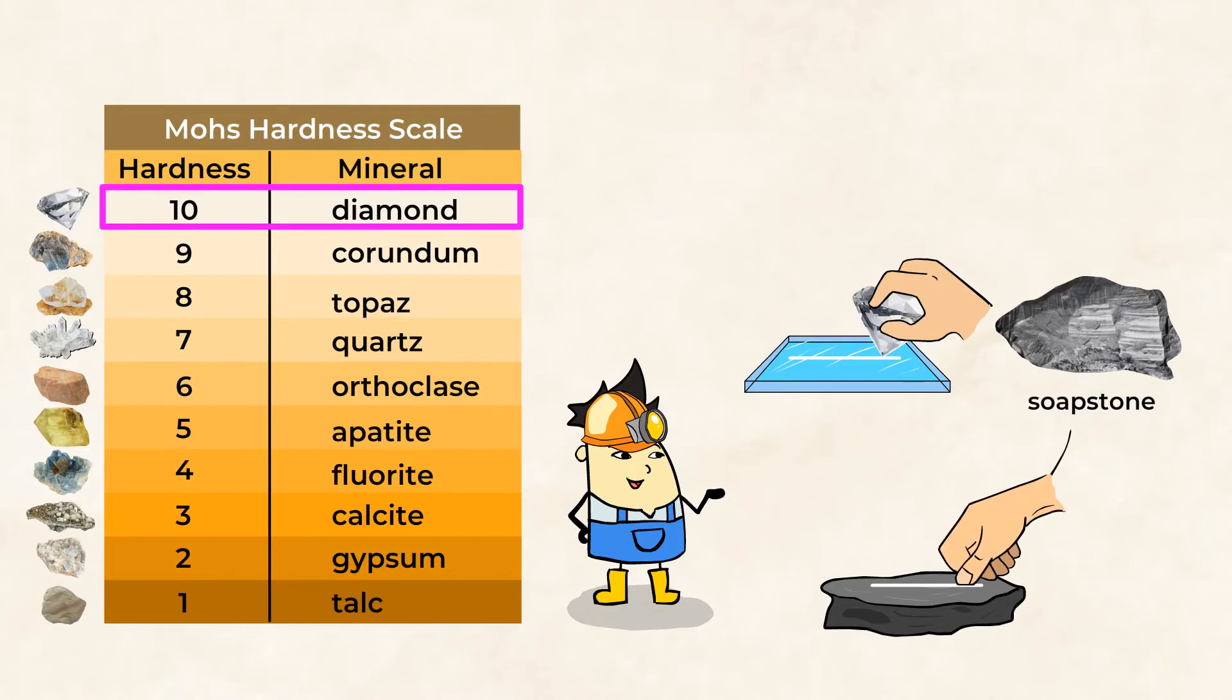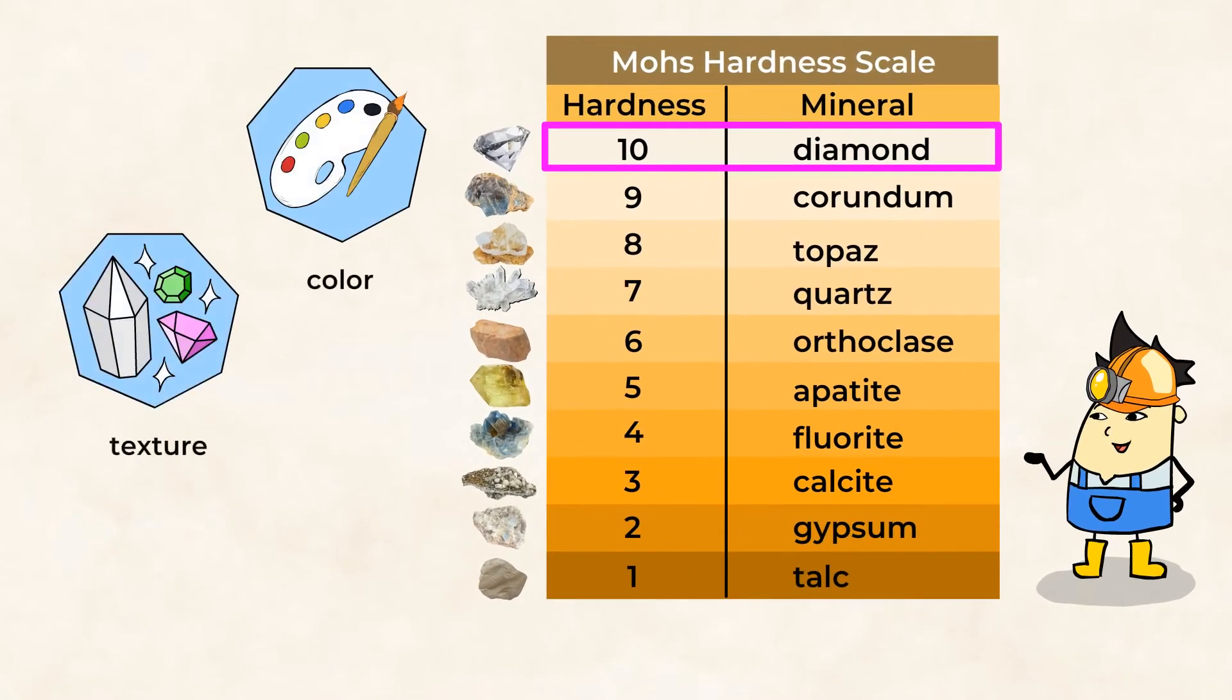By observing the different properties like color, texture, and hardness, geologists categorize rocks and minerals into groups. And this helps other people to identify them later.